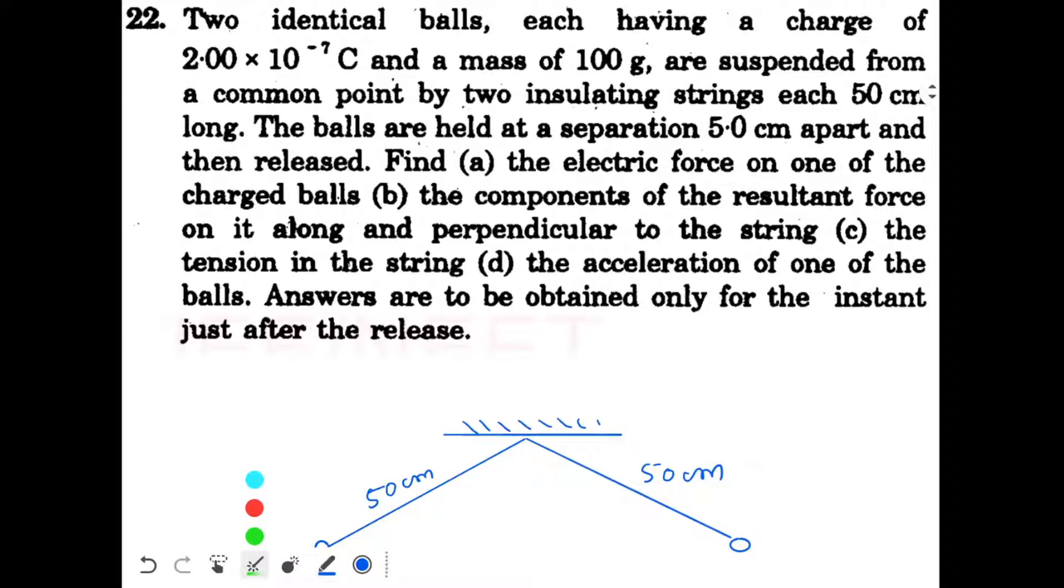Okay, we are looking at question number 22 from chapter 29 of H C Verma. Two identical balls each having a charge of 2 x 10^-7 coulomb and a mass of 100 gram are suspended from a common point by two insulating strings each 50 cm long.